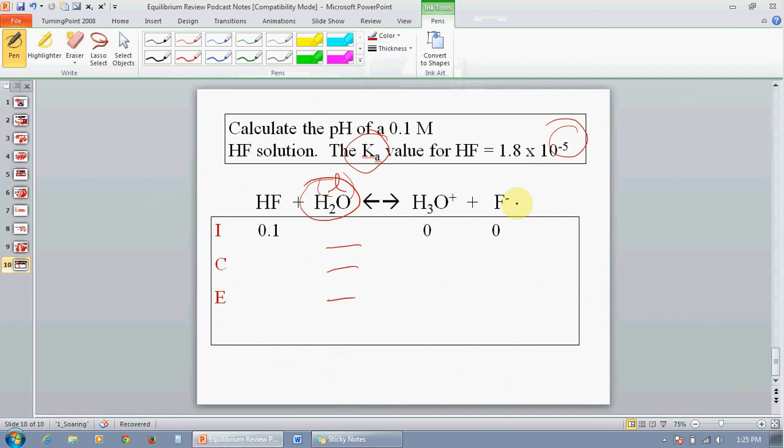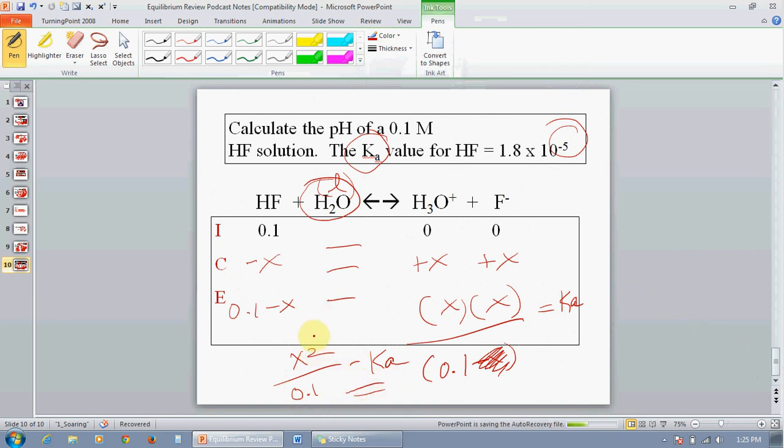We would lose X here and gain X's here, leaving us with 0.1 minus X and XX. So, it would be X squared over 0.1 minus X equals our K value. We would leave this X out, so it's going to simplify to X squared over 0.1 equals Ka. And this is very easy and simple to solve for. When we finally find our X, we'll go back in and find our acid equilibrium and our hydrogen ion and fluoride ion concentrations, and we're done.